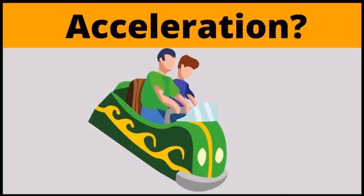This is Part 2 of the chapter Motion, Force and Work. Acceleration is the change in velocity per second. Velocity is the distance traveled by a body in a specific direction in unit time. Acceleration is a vector quantity, and to find it, we divide the change in velocity by the time taken.